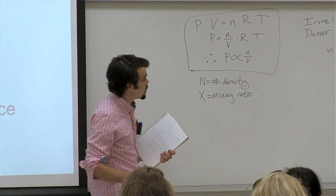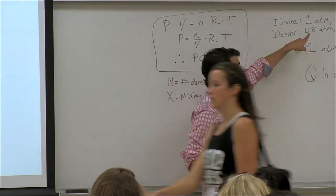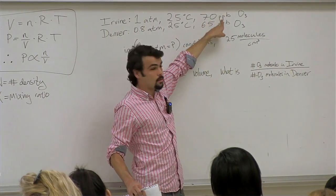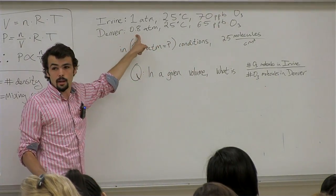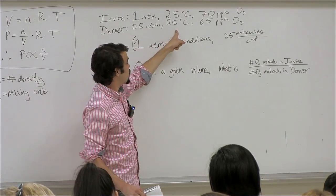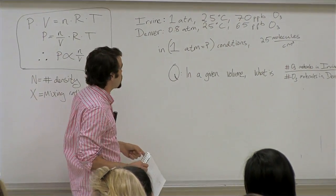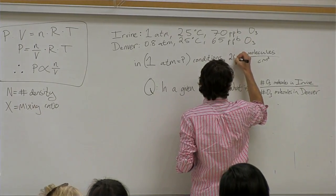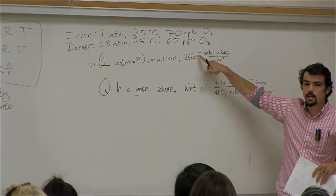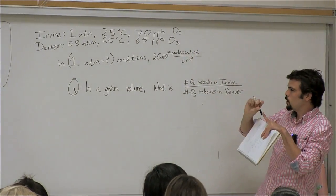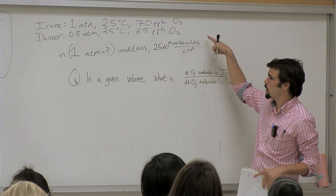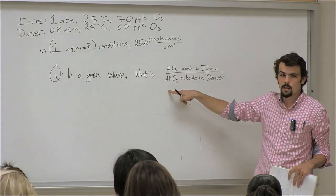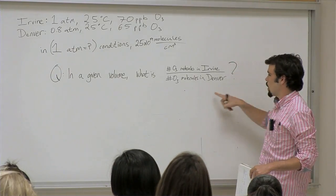The question states that in Irvine the pressure is 1 ATM, temperature is 25°C, and ozone abundance is 70 parts per billion. In Denver, pressure is 0.8 ATM, temperature is 25°C, and ozone is 65 ppb. At 1 ATM there are 2.5×10¹⁹ molecules per centimeter cubed. The question asks: in a given volume, what is the number of ozone molecules in Irvine divided by the number in Denver?